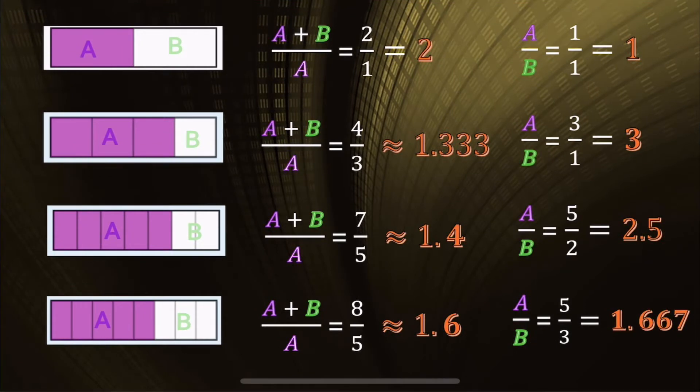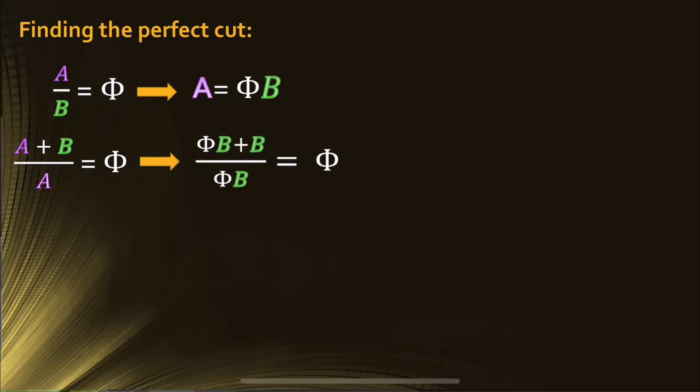How do we find the perfect cut? Well, that's exactly why we have this wonderful thing called algebra. So let's say the ratio of A to B is some ratio, we'll call it phi, and let's just make it equal to A. Let's say that the ratio of A plus B to A is also equal to phi, because we want it to be equal to the ratio of A to B. And with a little bit of substitution, we can make it look like this.